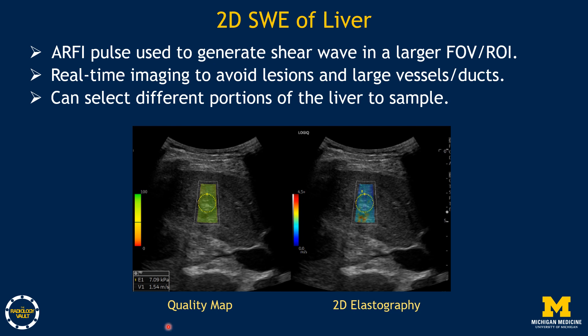The quality map uses a stoplight system: green meaning good data, yellow meaning caution or not-so-good data, and red meaning stop — data not usable. We use the quality map to determine where to place the ROIs. With a quality measure, five measurements may be appropriate. Quality maps can find many but not all artifacts, so we still need to evaluate both the quality map and the elasticity map together to make the conclusion.